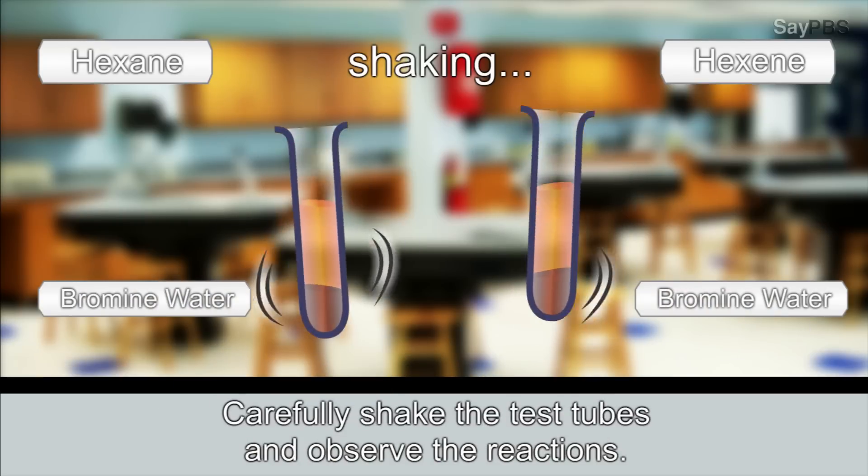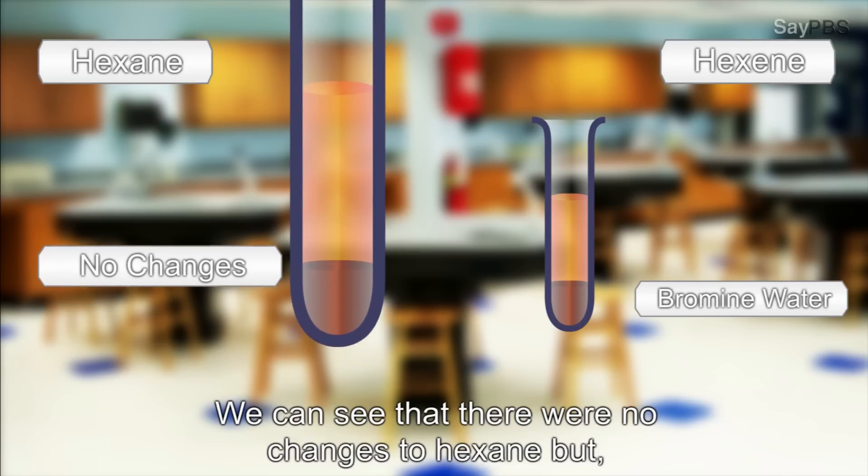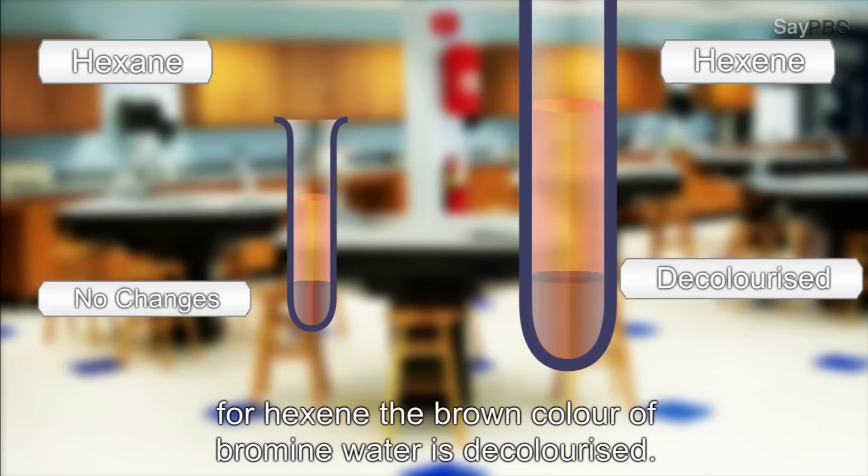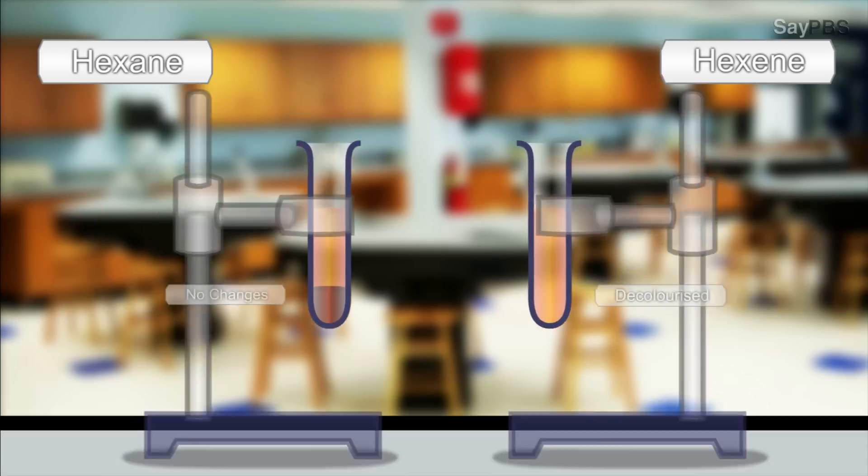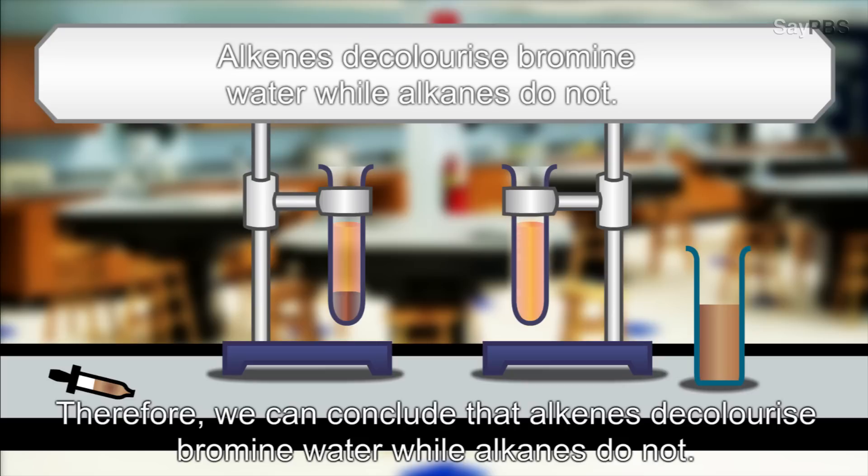Carefully shake the test tubes and observe the reactions. We can see that there were no changes to hexane. But for hexene, the brown color of bromine water is decolorized. Therefore, we can conclude that alkenes decolorize bromine water while alkanes do not.